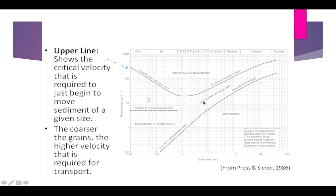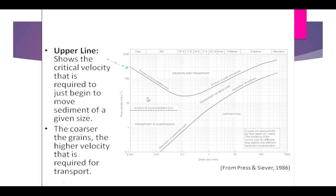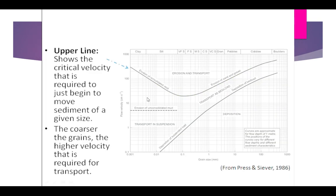The first, the upper line, is the entrainment line, also known as the critical erosion velocity curve or mean erosion velocity curve. It is the critical velocity or minimum velocity required to just pick up the particular sediment into motion. It is required to just begin the movement of that sediment.